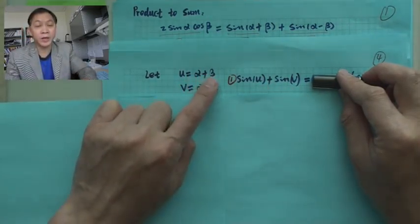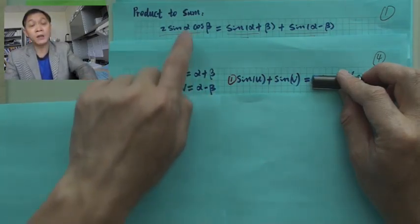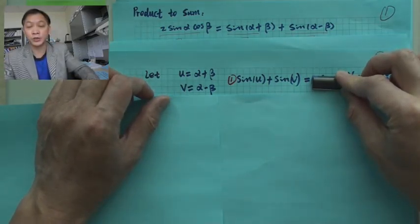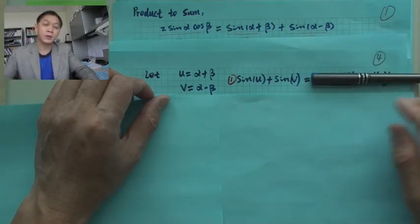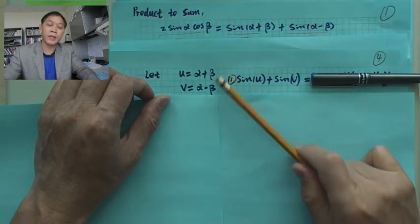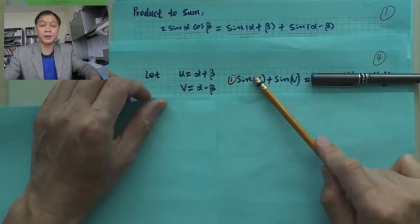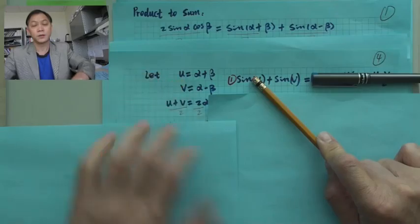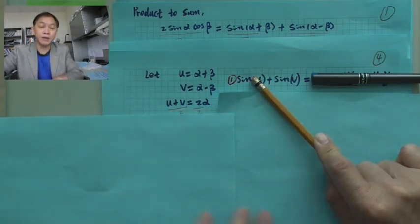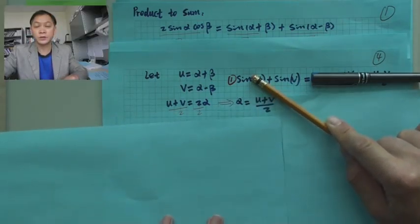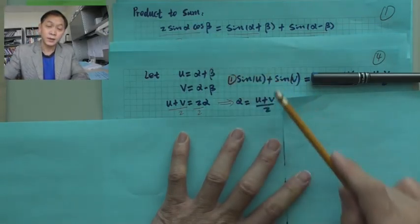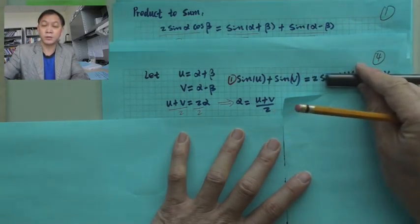Now, if alpha plus beta is u and alpha minus beta is v, how do we express alpha and beta? If you add those two equations, the beta terms cancel, giving you two alpha equals u plus v. Divide both sides by two and you have alpha equals u plus v over two. That's the first one.